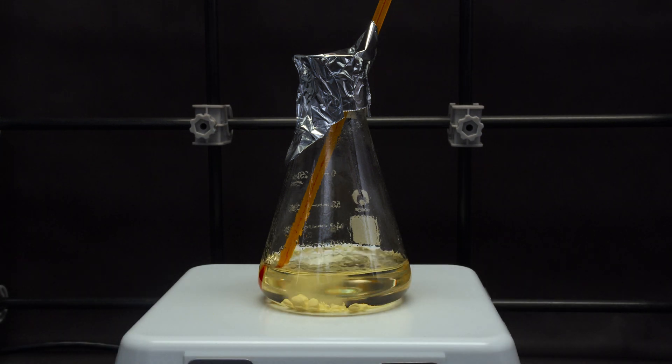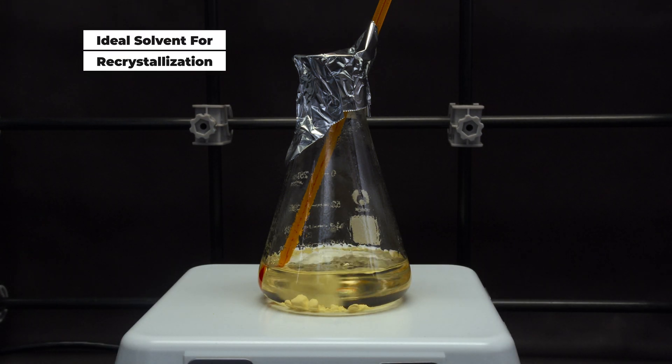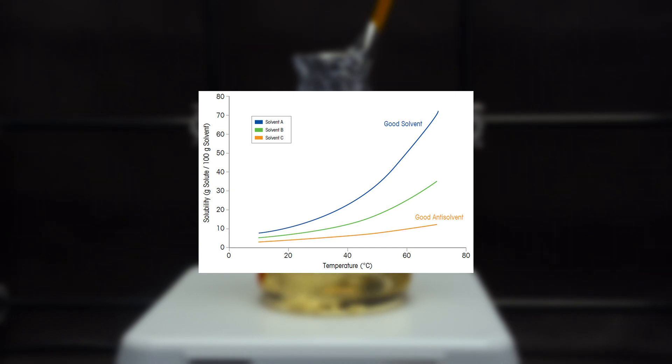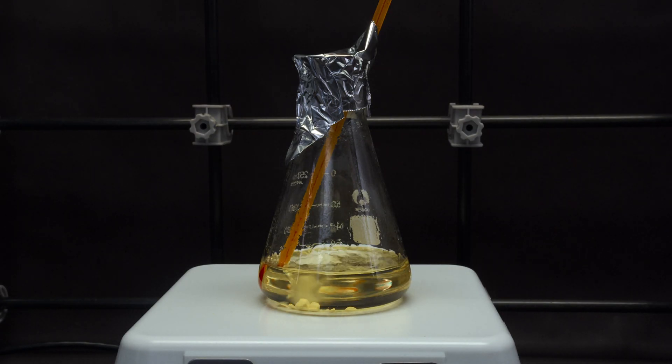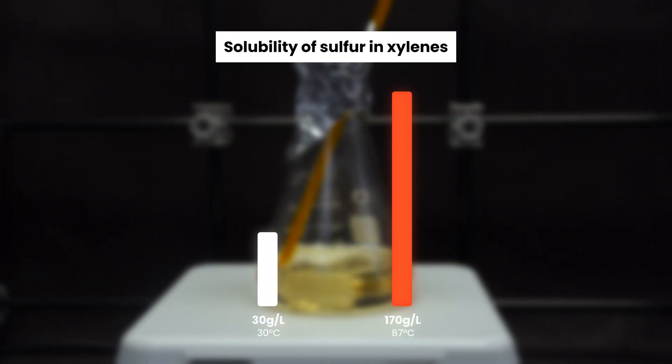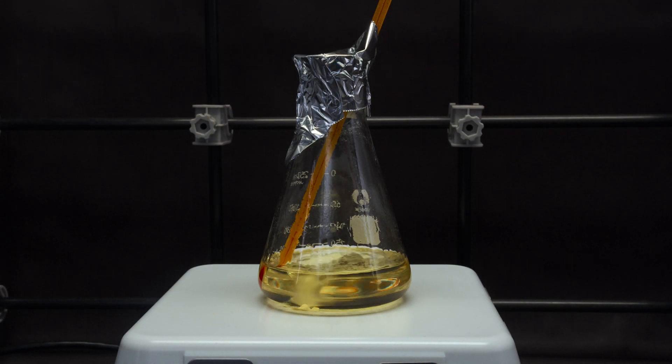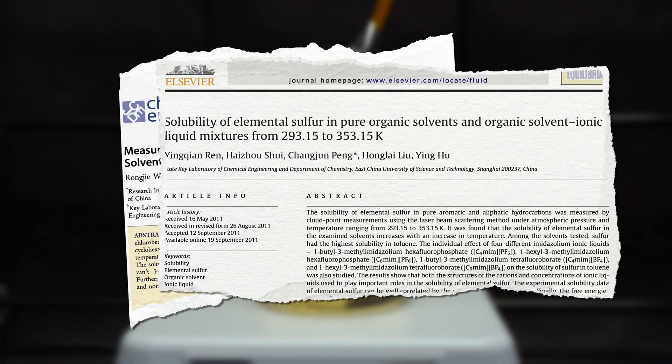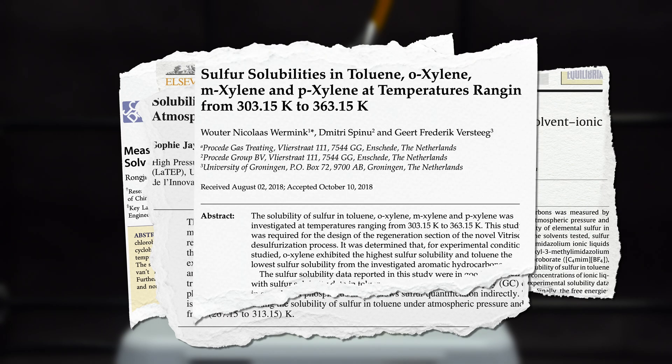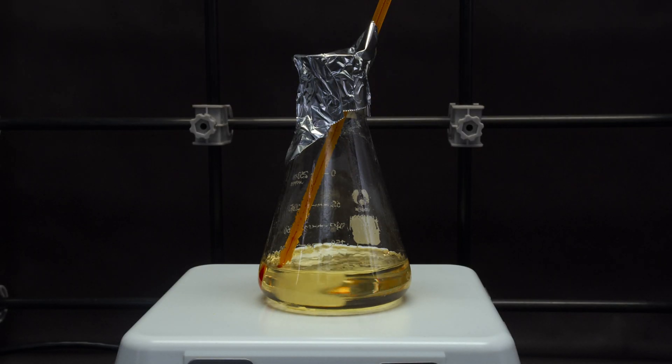The ideal solvent for recrystallization is a solvent in which the solubility of the solute is low when the solution is cold, and high solubility when the solution is hot, giving a high difference in solubility at different temperatures. In this case, the solubility of sulfur is only about 30 grams per liter of xylene at 30 degrees Celsius, and 170 grams per liter at 87 degrees Celsius, according to literature. The large difference makes xylene one of the best solvents used for sulfur recrystallization. I have included links for several papers regarding sulfur solubility in different organic solvents. Feel free to check them out if you want to learn more about it.